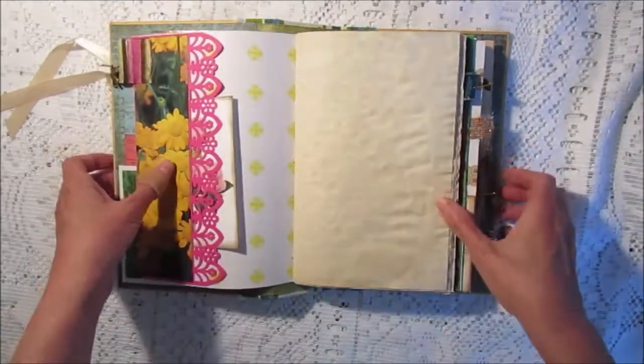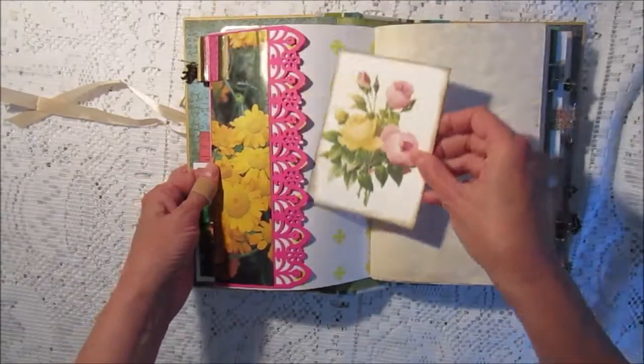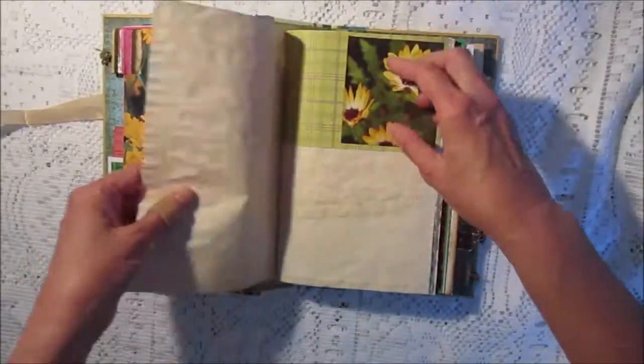And here's the first signature. I've got a pocket and image of flowers. And here's some tea dyed paper.